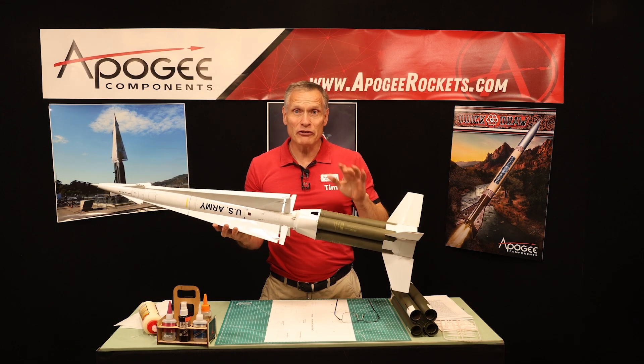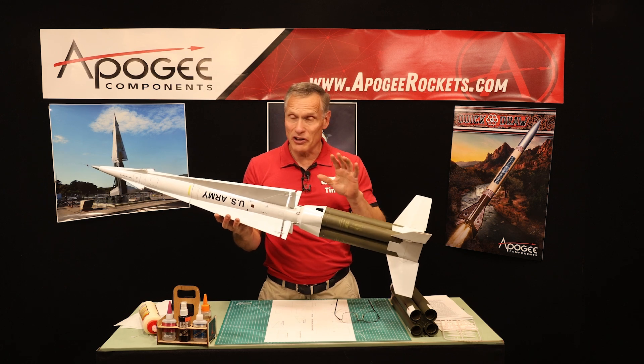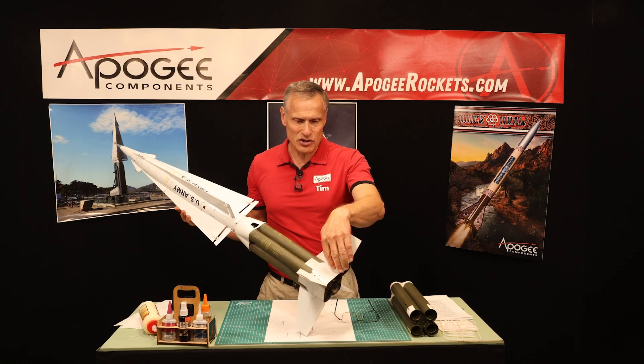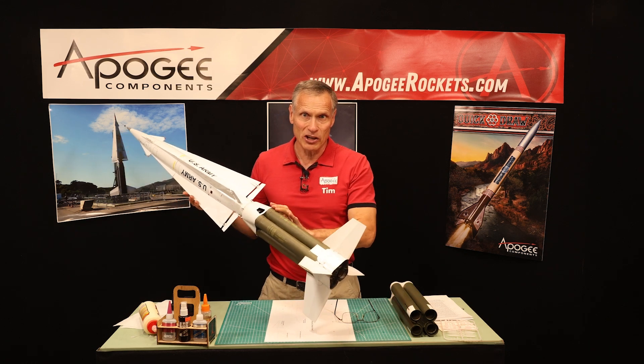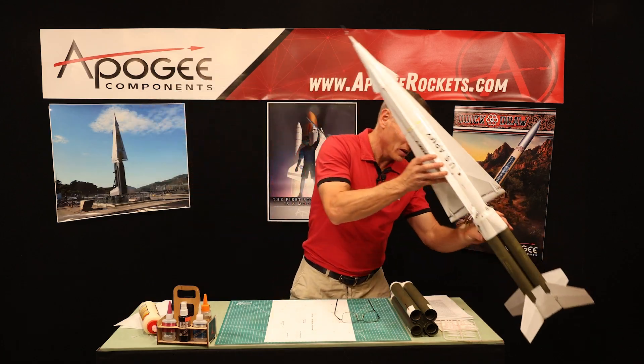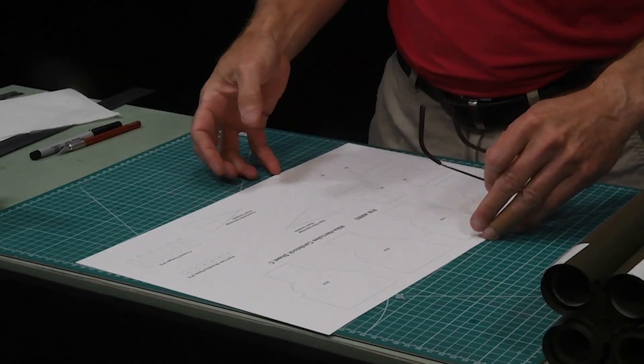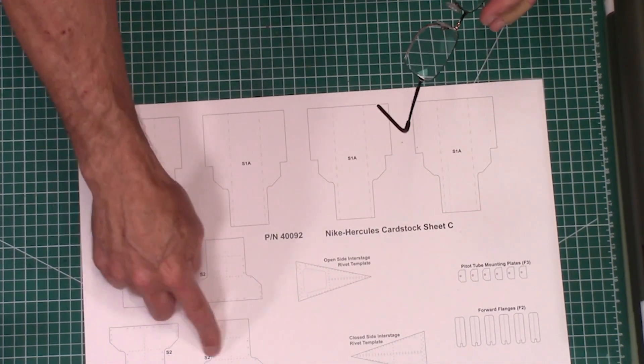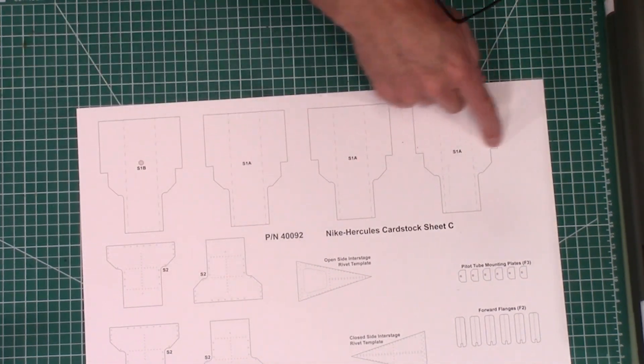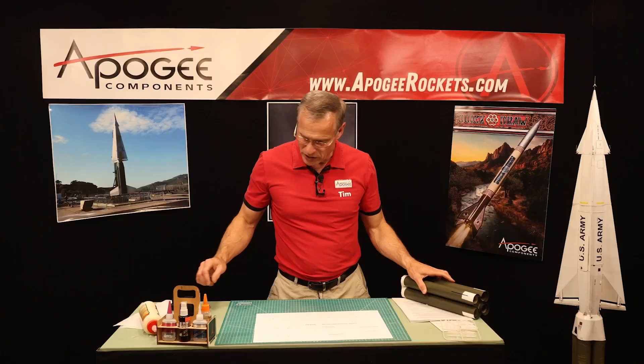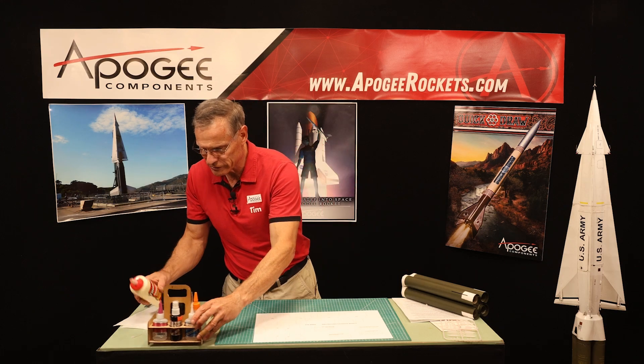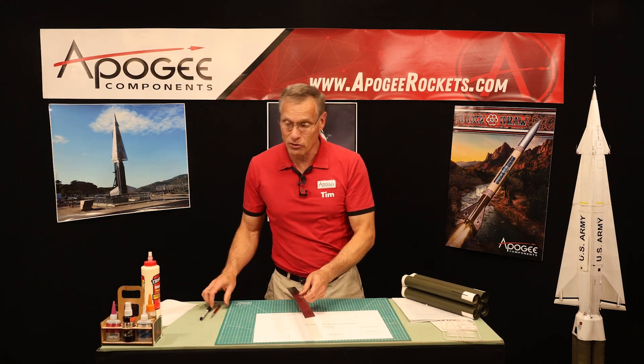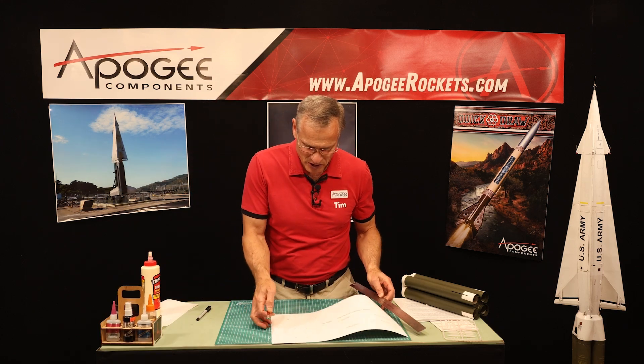We're in step 53 in the construction of the Nike Hercules, and we're going to start building this shroud back here on the base of the rocket. We're going to start by cutting out some patterns. So from this sheet right here, we want four of the S2s and all of these right here. Get out your knife, get out your ruler, and enjoy cutting out all these paper templates.